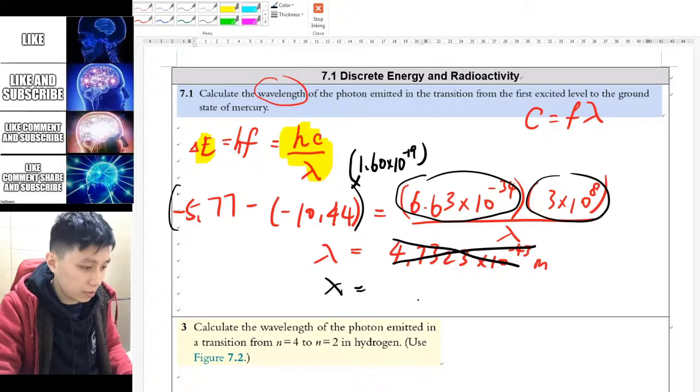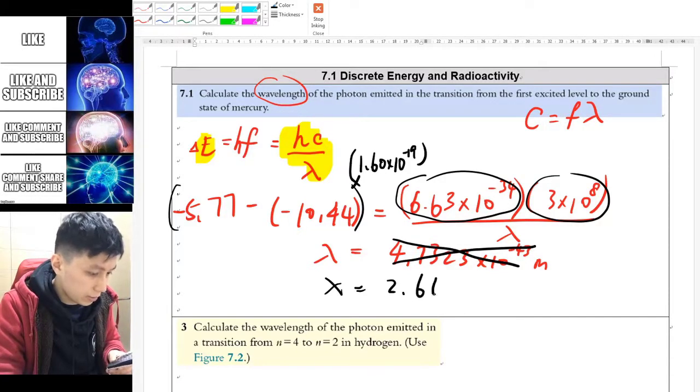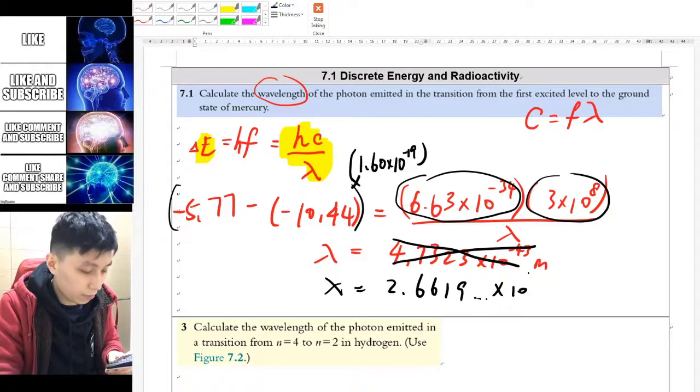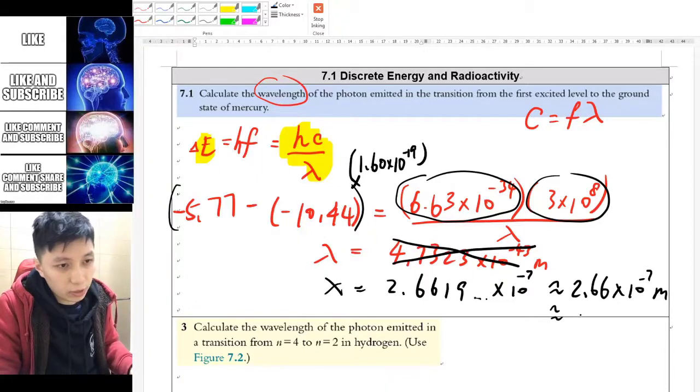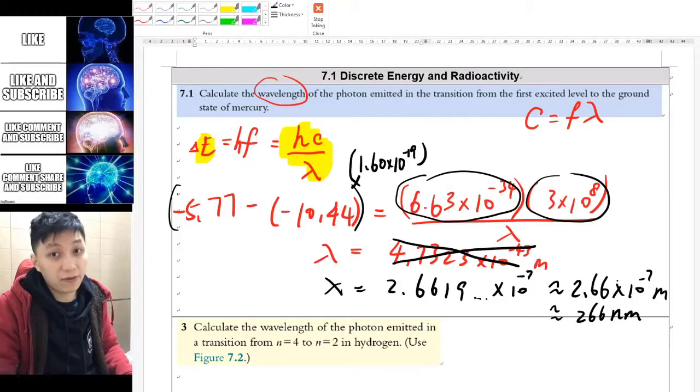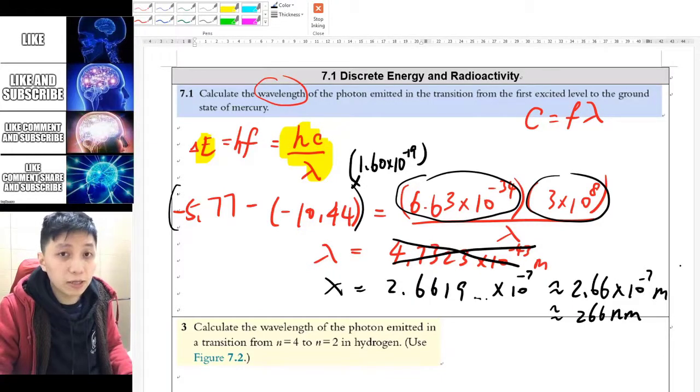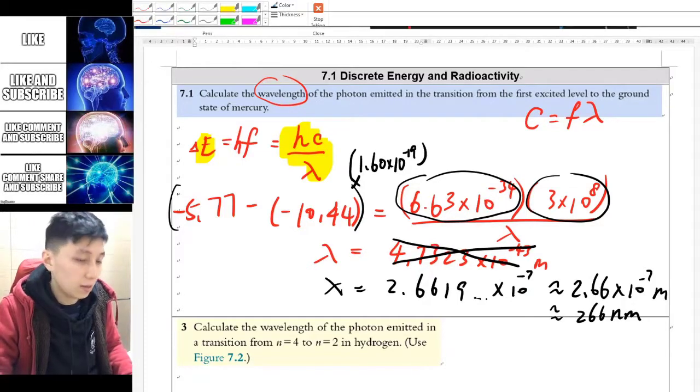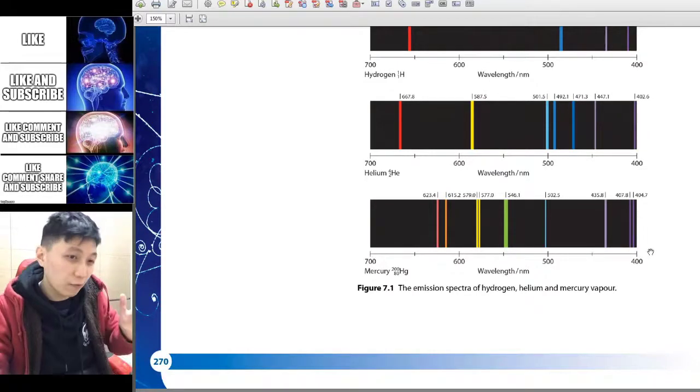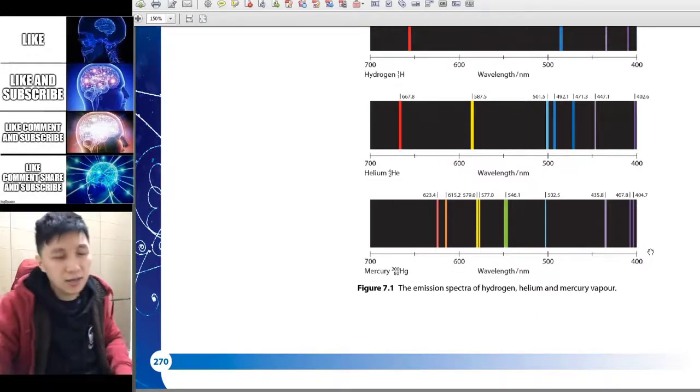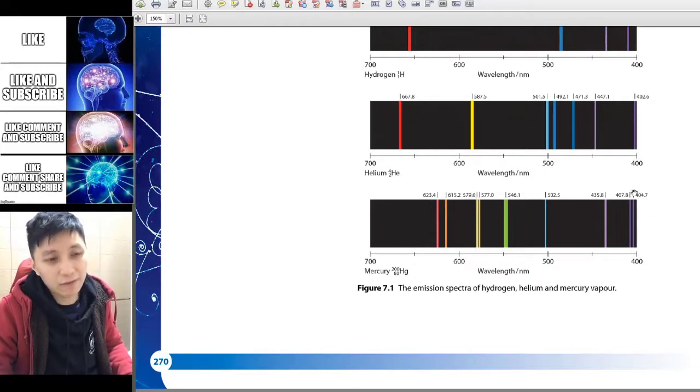Instead, it should be something like 2.6619 something, times 10 to the power of negative 7. Let me round it to 2.66 times 10 to the power of negative 7 meter. Or you can rewrite it as 266 nanometer, because nano is negative 9. However, 266 nanometer is going to be the ultraviolet. And that means we would not be able to see it on the emission spectrum. Let's have a look. So for the diagram on the textbook, this is mercury. You can see at most, we can see up to the violet, which is roughly 400 nanometer. So 200 something is even on the more right hand side. And that is going to be ultraviolet, because it's beyond this violet color.